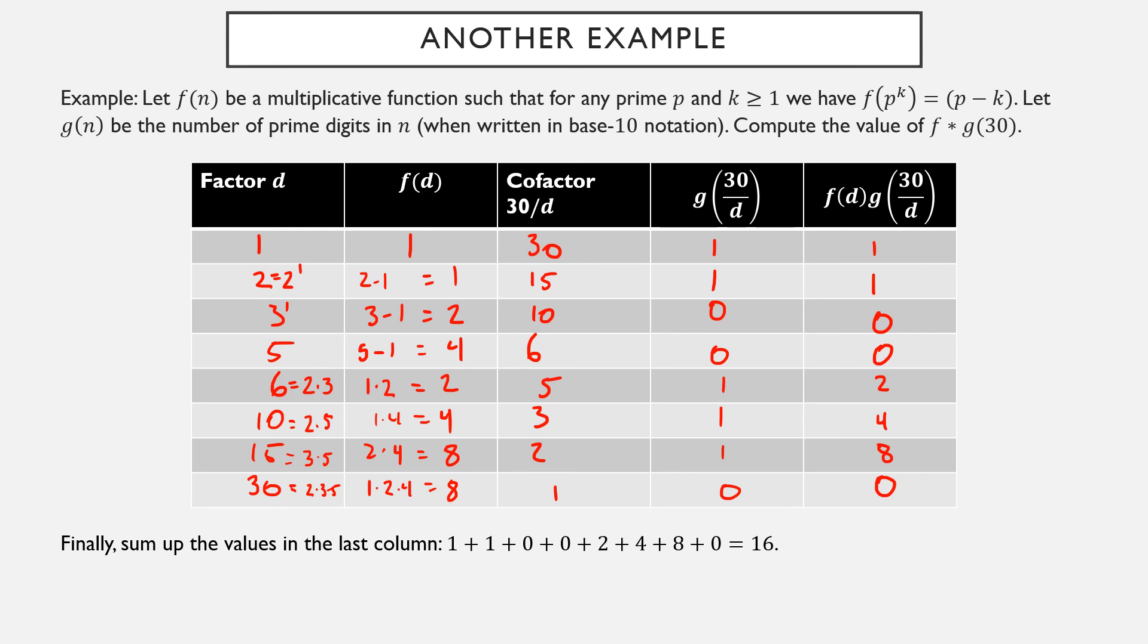So the Dirichlet convolution f star g, where f is this function which is multiplicative, and f of a prime power is the prime minus the power, and g(n) is the number of prime digits in the base 10 notation way of representing the number n. If f and g are those functions, the Dirichlet convolution f star g of 30 is 16. So that's Dirichlet convolution and working through a few examples. Notice we never really brought up what this has to do with multiplicative or completely multiplicative functions. That will be in the next video.